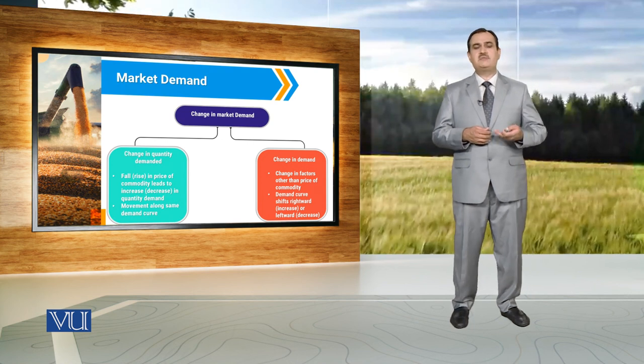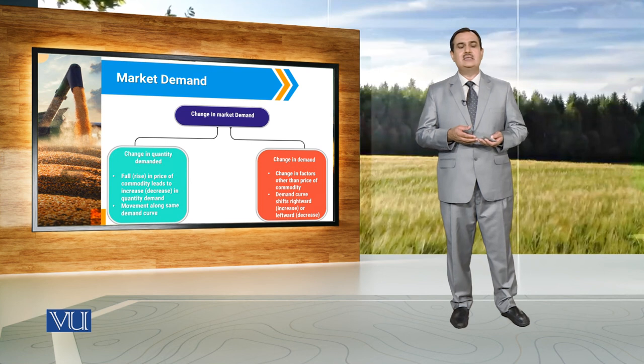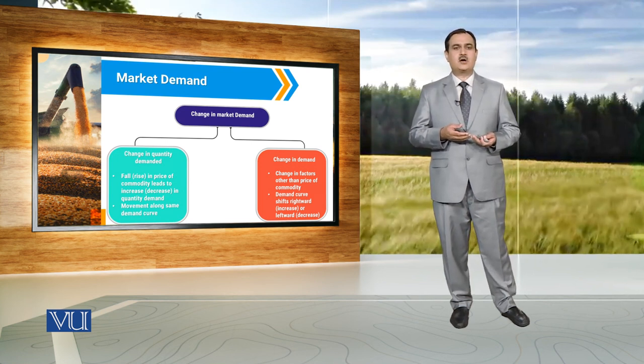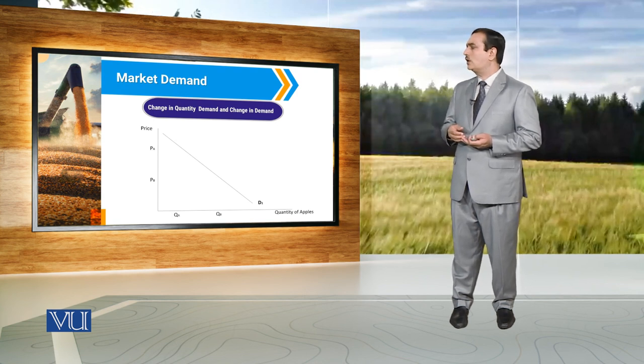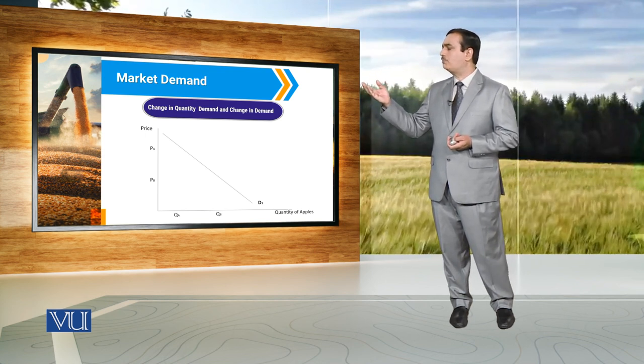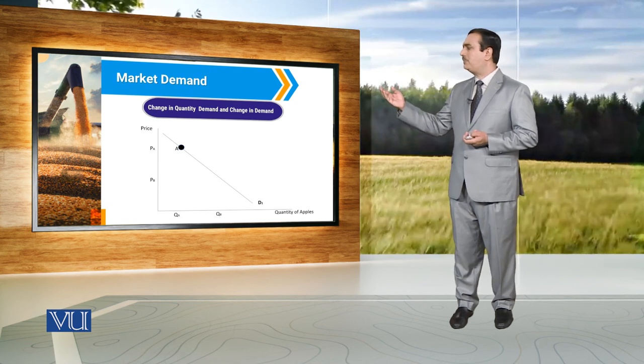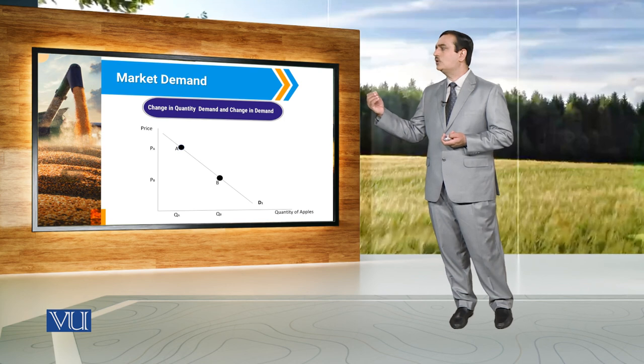To elaborate the concept of change in quantity demand and change in demand, we are using this particular association between quantity of apples and price. In this diagram, you can observe if price is equal to PA, then quantity demand of apples is equal to QA. And when price of the commodity decreases from PA to PB, there is an increase in quantity demand of apples.